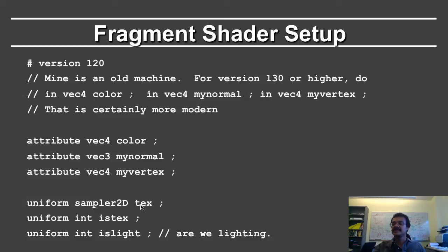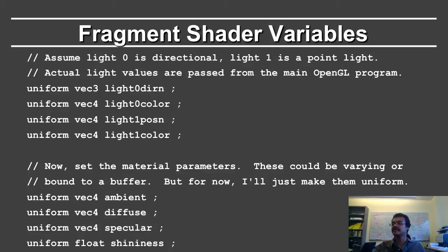Here I'm defining a sampler2D, which is for texture. The keyword uniform means that it doesn't change over the different fragments — it remains the same over the whole image. IsTex is just an integer 0 or 1 saying do I texture or not. IsLight is again, are we lighting or not. So this is the basic set of global variables.